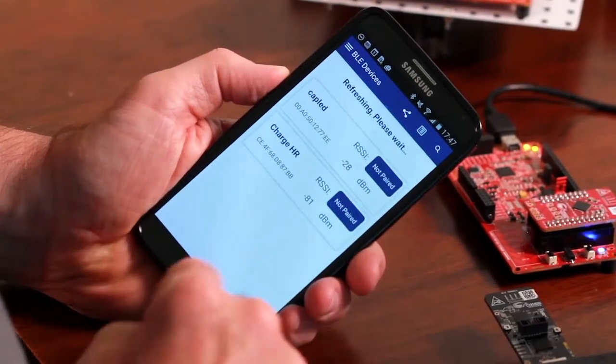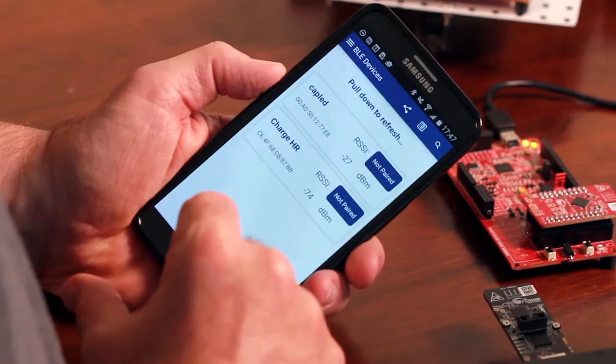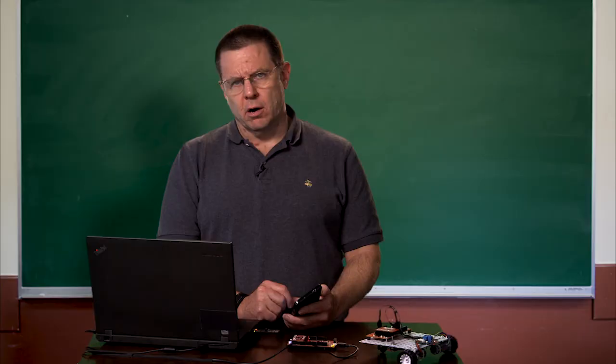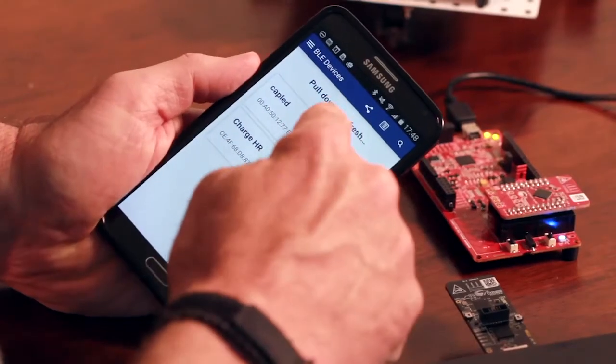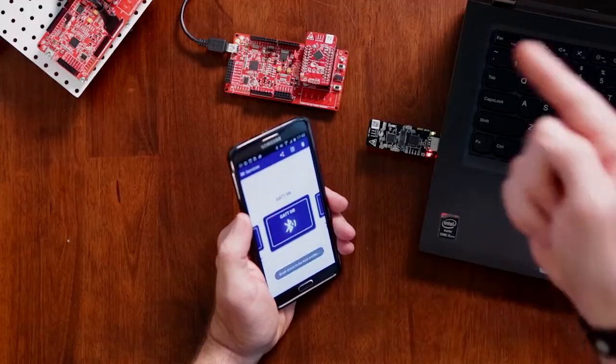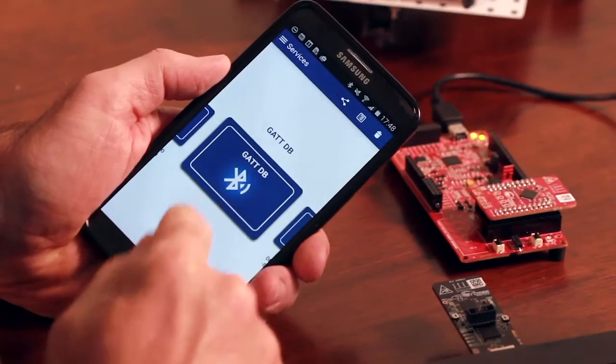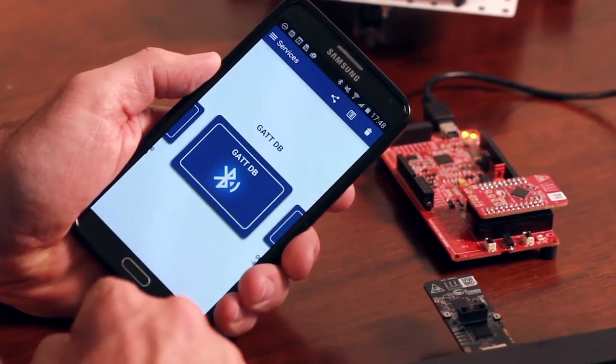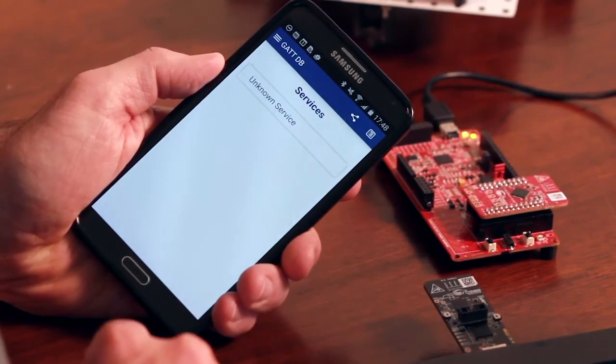I'll have it refresh and it looks around me. Currently, it can see the board called CapLED. It also sees something else called Charge HR, which is somebody's heart rate monitor that's in this room. All right, so I'll click on the CapLED. As soon as I click on the CapLED, the light stops blinking. Okay, that's good. When I look on the screen, I see the GATDB, which is the GAT database browser. All right, that's nice. So I click on the GAT database browser.